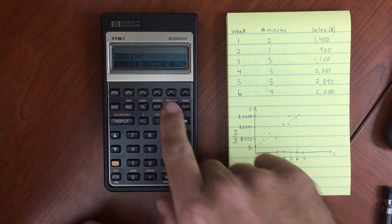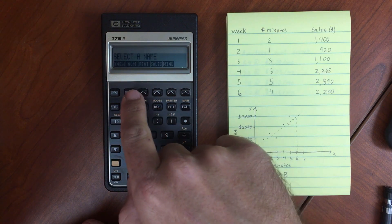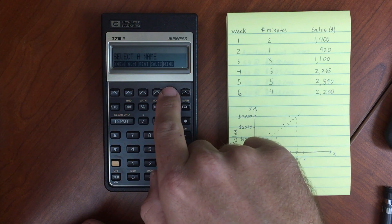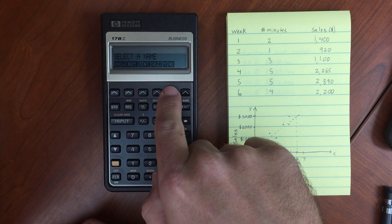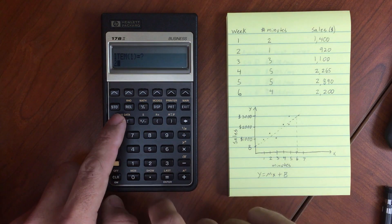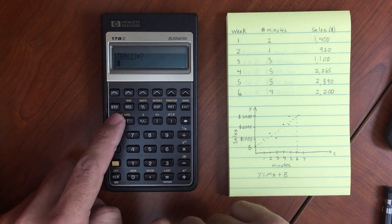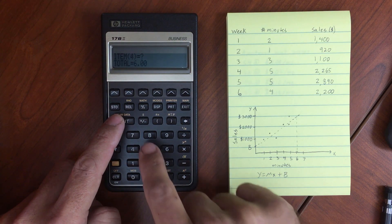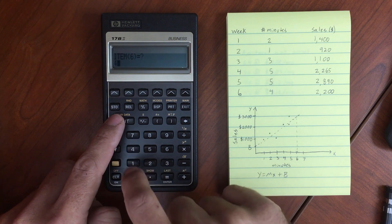So first we need our lists. Now I've already gone ahead and entered in some empty lists. So let's go ahead and pull our minutes menu. And item number one is two. And we have one, and three, and five, and five, and four.